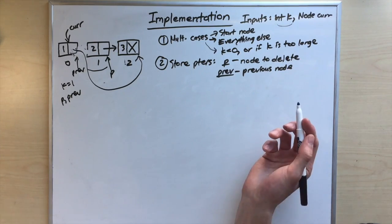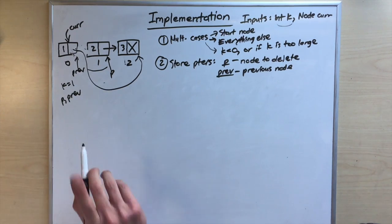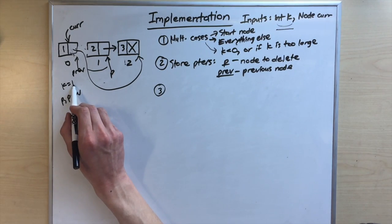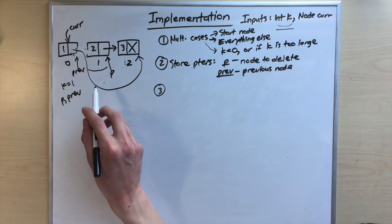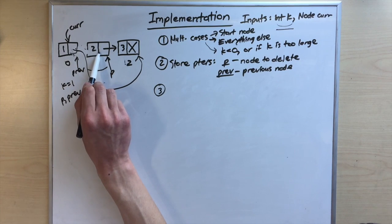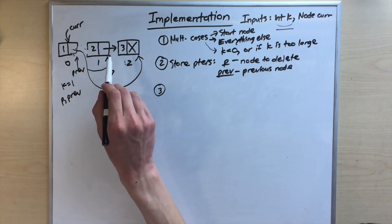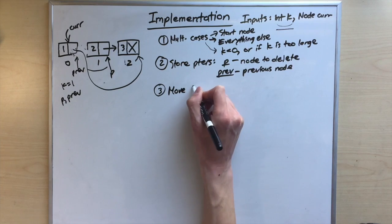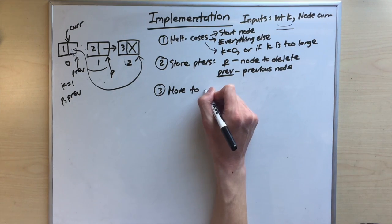To move p to the correct position, we decrement k by one each time we move forward. When k equals zero, we're at the node we want to delete. So p starts at the head, moves forward, and we subtract one from k each step until k equals zero.